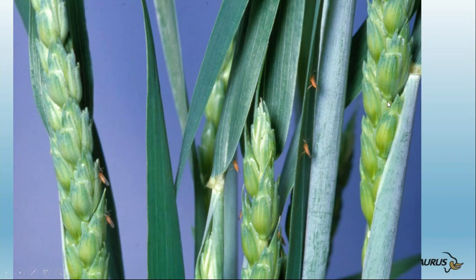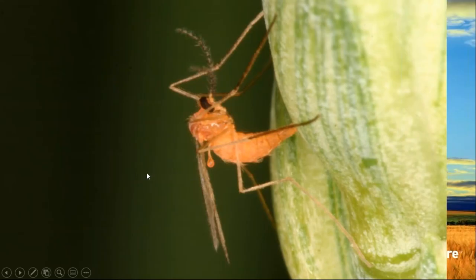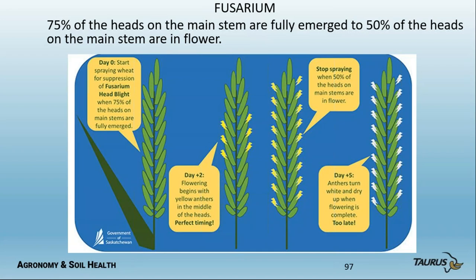As soon as the head emerges, midge start laying eggs on it — even before it's out of the boot, you can see midge there. Midge damage coincides with the early stage of head emergence. Once you have the anthers starting to show in a big way, even if midge lays eggs, the damage will be a lot less. If your heads are already out and you've got your anthers showing, that progresses very quickly and the damage is a whole lot less. Monitor midge using the maps produced, and if you're a large-scale producer, consider pheromone traps.